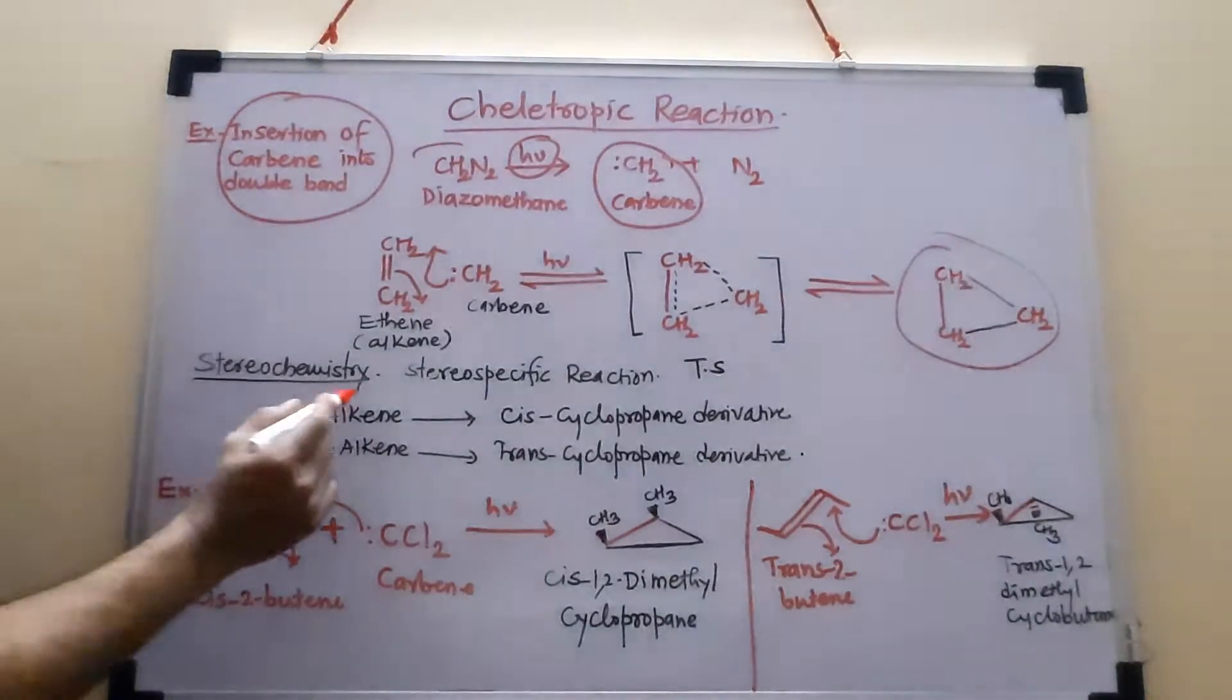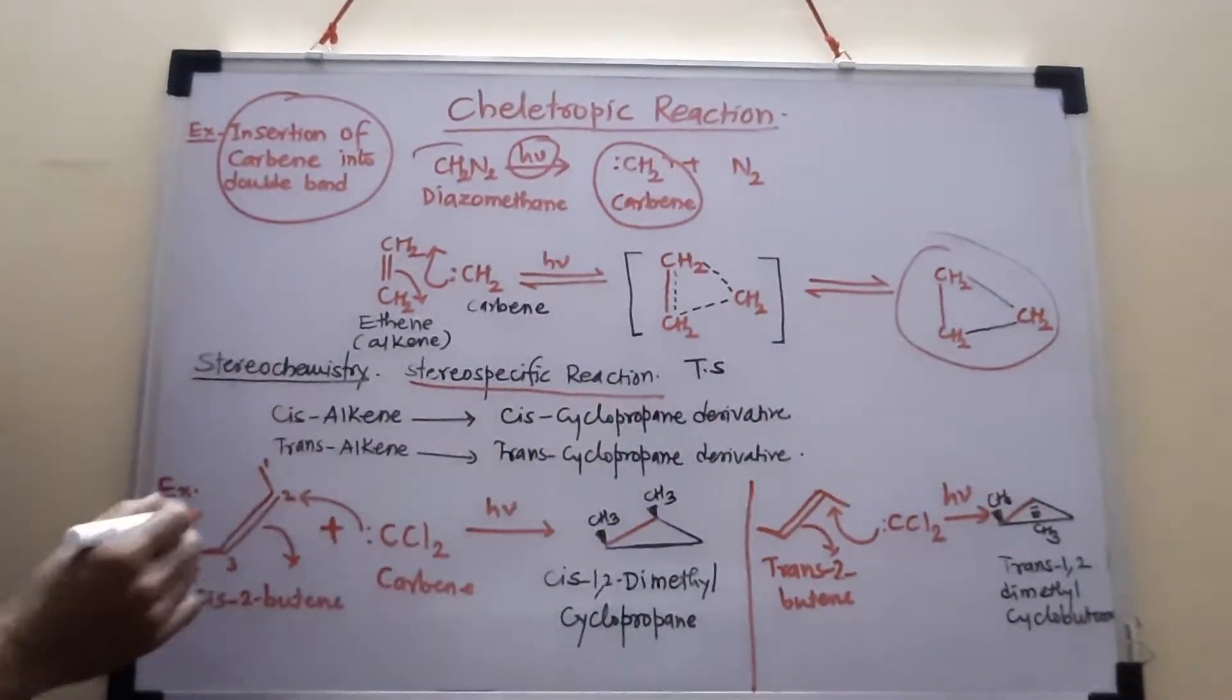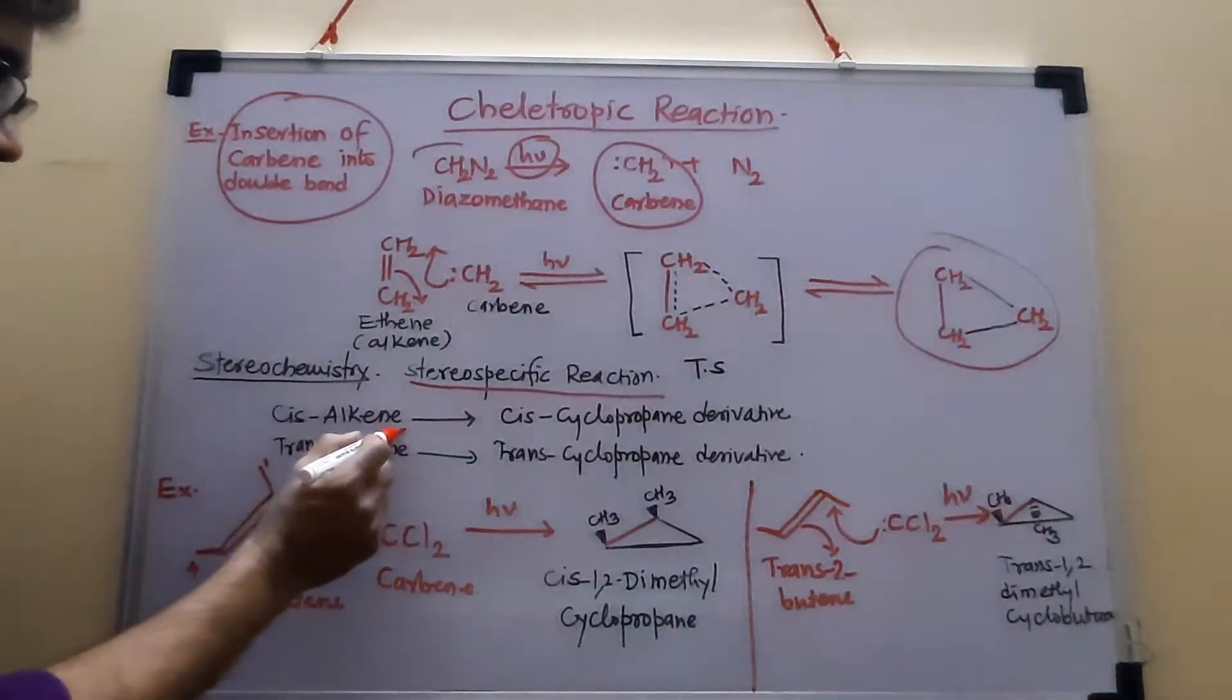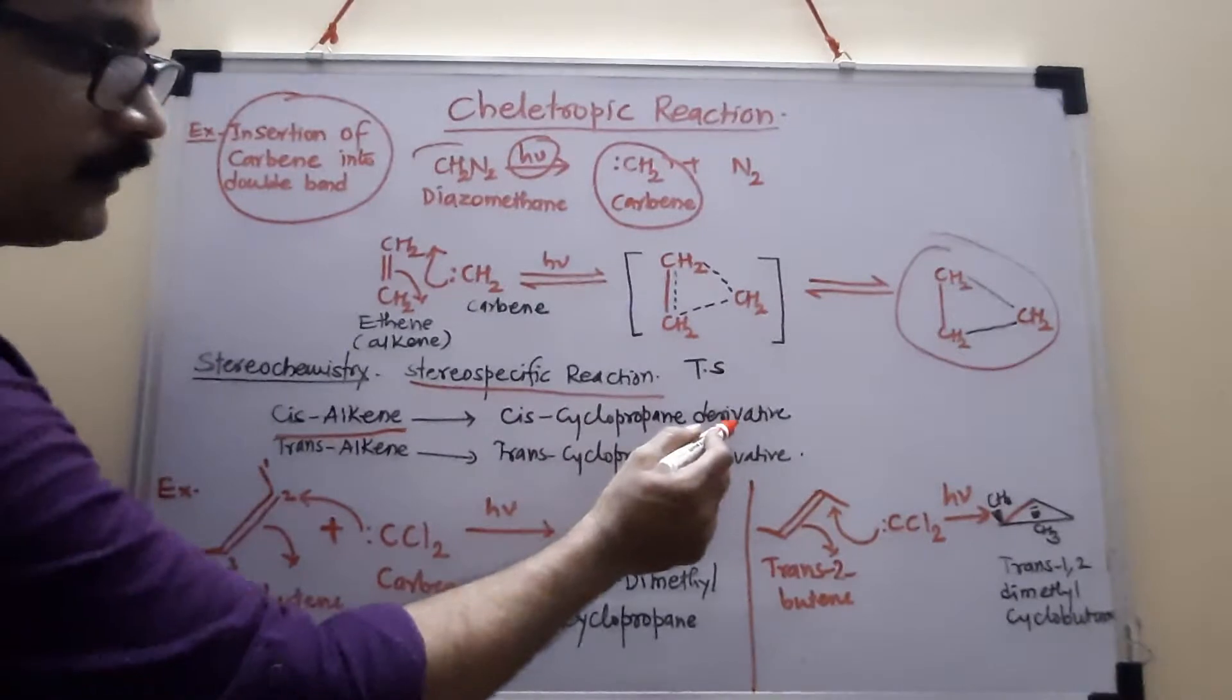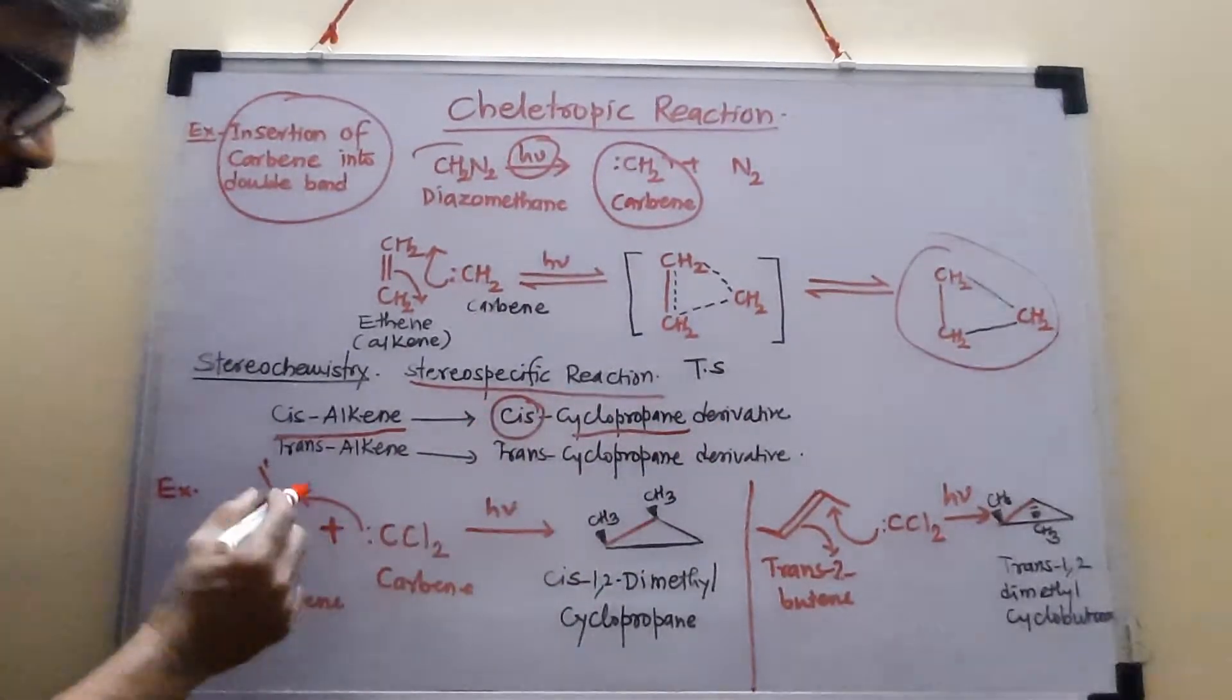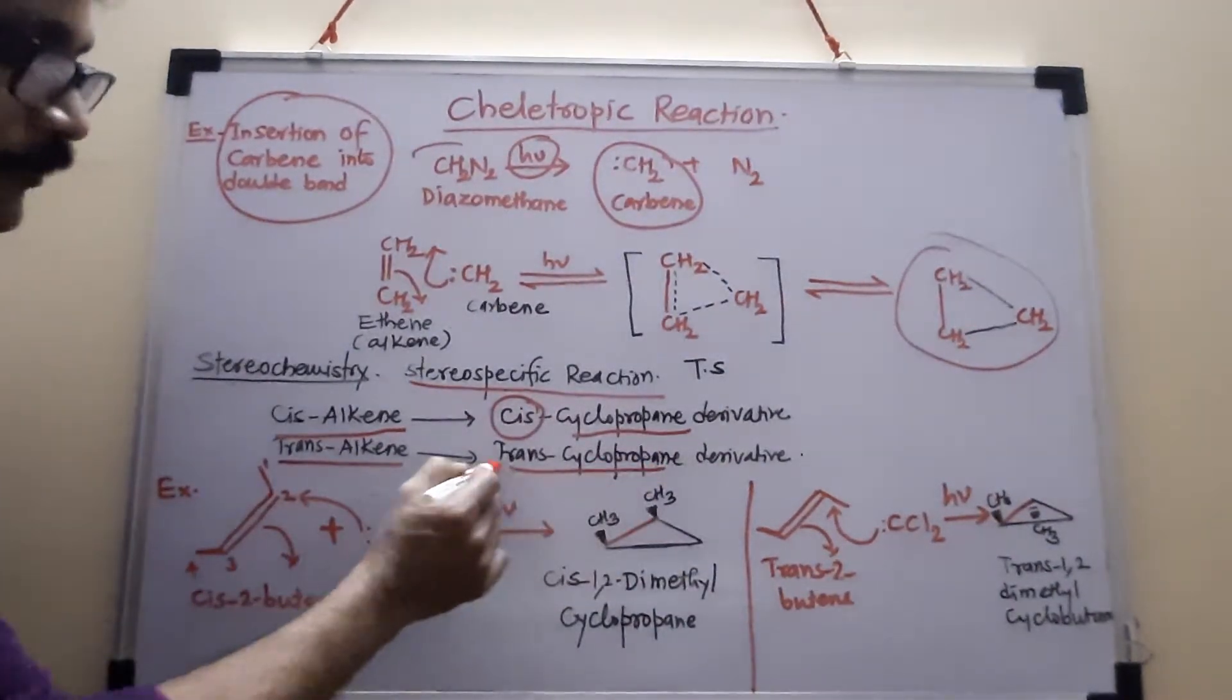Now, this reaction is highly stereospecific. When we discuss stereochemistry, this reaction is highly stereospecific. So if the starting substrate is cis-alkene, then definitely whatever cyclopropene you get, that must be cis. And the trans-alkene gives trans-cyclopropene.